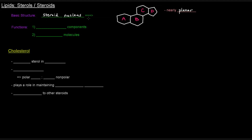All steroids have this basic structure, this basic four-ring system. They vary slightly from one to the other, but they share that same general arrangement. They function as membrane components, and they can also function as signaling molecules, namely hormones.